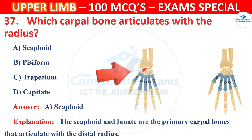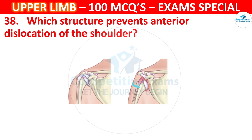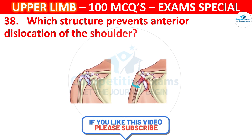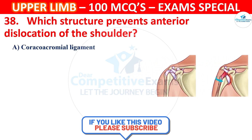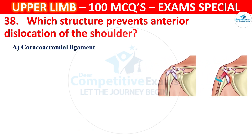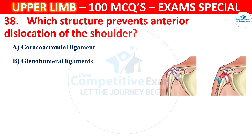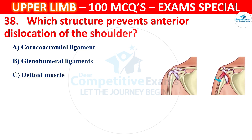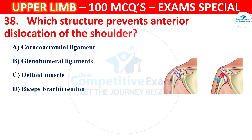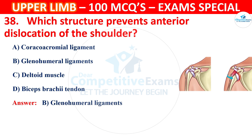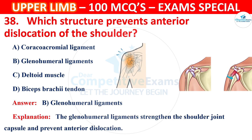Question number 38: Which structure prevents anterior dislocation of the shoulder? Options: coracoacromial ligament, glenohumeral ligament, deltoid muscle, or biceps brachii tendon. The correct answer is B, glenohumeral ligament. The glenohumeral ligaments strengthen the shoulder joint capsule and prevent anterior dislocation.